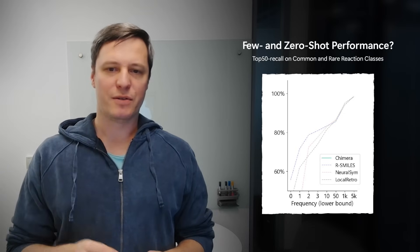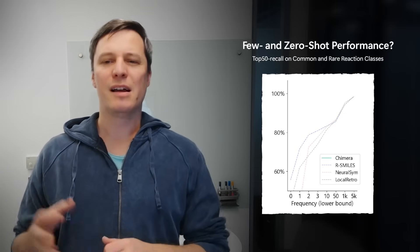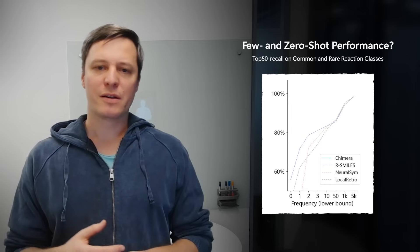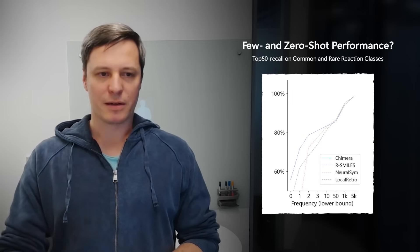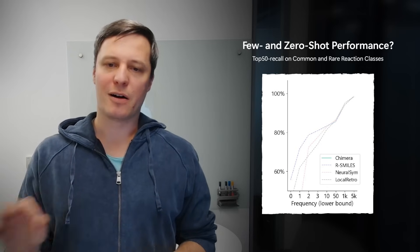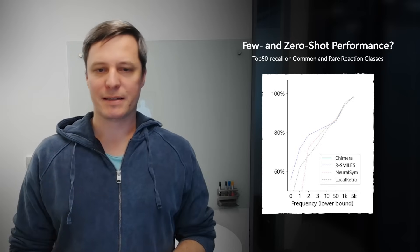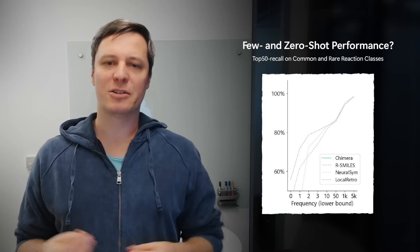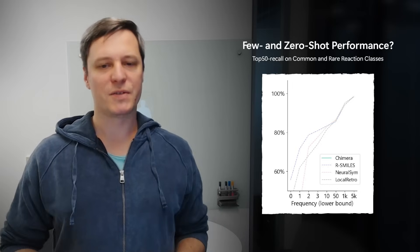However, rare reactions, so where we don't have lots of examples in the training data, are very often super important for synthesis planning strategy. You can see this here where we sort the performance of models by the frequency of how often different reaction classes occur in the training data. And so far, this has been a major limitation of deep learning models in this domain.